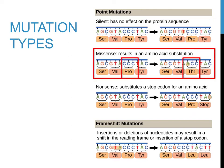A missense mutation is a particular type of substitution mutation. When this type of mutation occurs, the amino acid produced is changed from one to another. When CCC, which is normally produced as proline, is changed to ACC, which produces threonine, the protein that is produced is changed by only one amino acid.